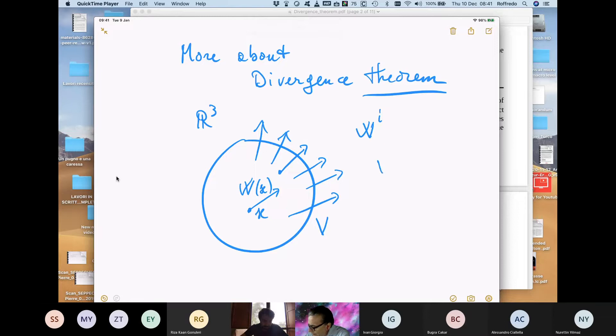And this field W is represented in coordinates like in this way, where E_i is an orthonormal basis.